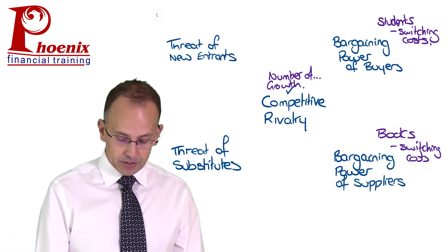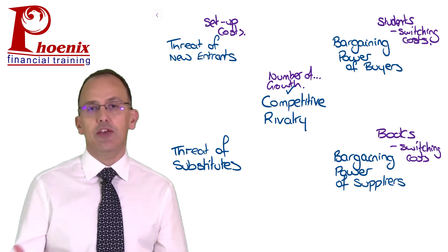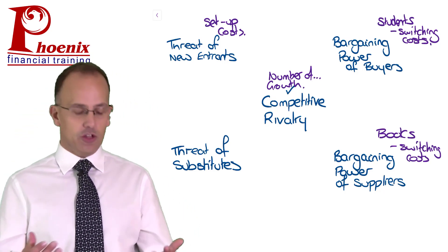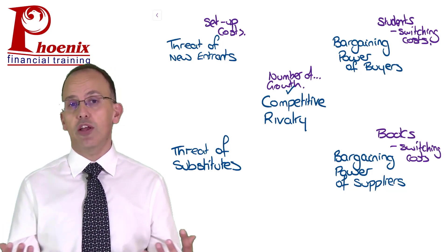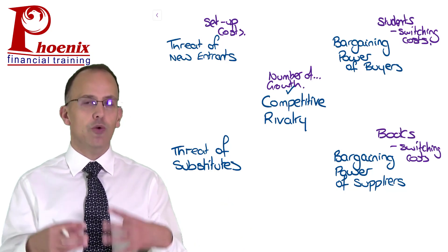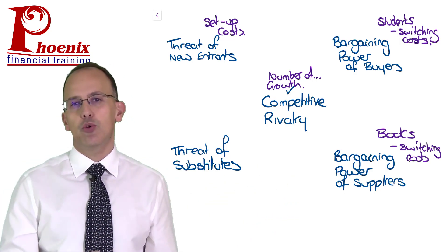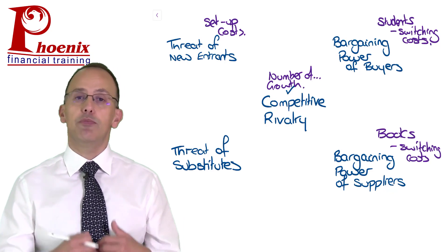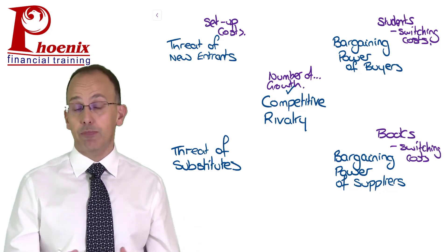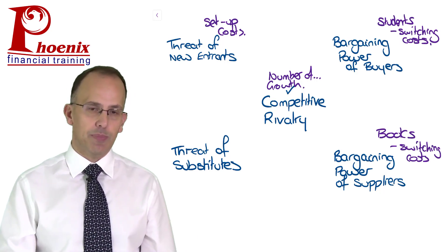The lower the switching costs for you, the more bargaining power you are going to have with these suppliers to say, I don't want to pay that price anymore — I could just as easily go somewhere else. And for the threat of new entrants, I'm probably going to look at something like the barriers to entry of set-up costs. If you did want to set up a college, you're going to have to get premises, write material, and pay for tutors. When you start a new college, you probably wouldn't get loads of students straight away. It is going to drain your cash very, very quickly. The cheaper that cost becomes to enter into the market, the bigger the threat. But if it's very, very expensive to get into this, it's less likely you're going to get new competitors.